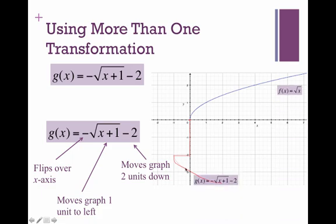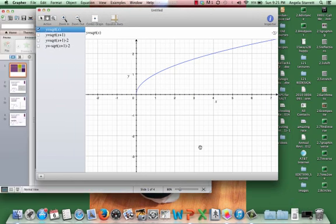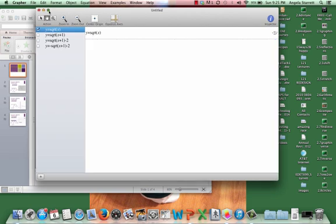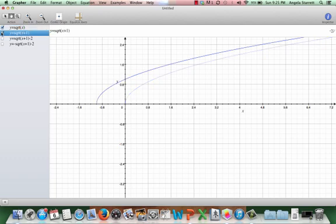So let's actually take a look at this step by step. Let me grab my graph right here. And so here is our basic square root of x. And here is moving it to the left 1. And so this gives me the square root of x plus 1.